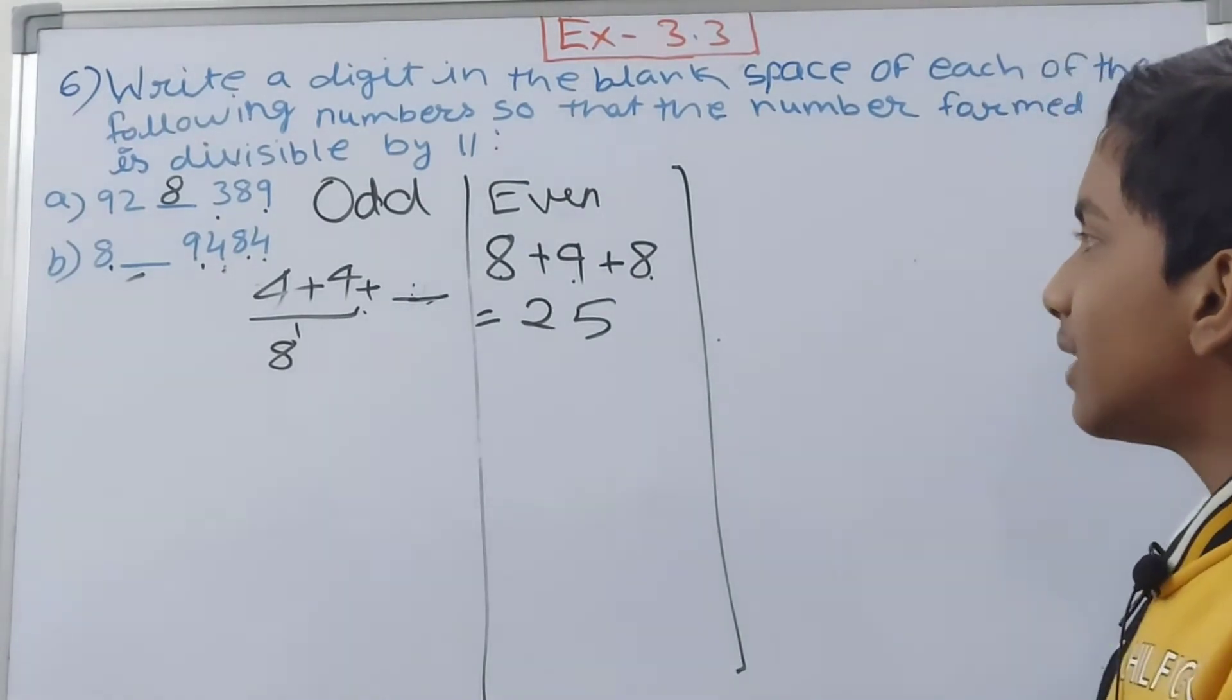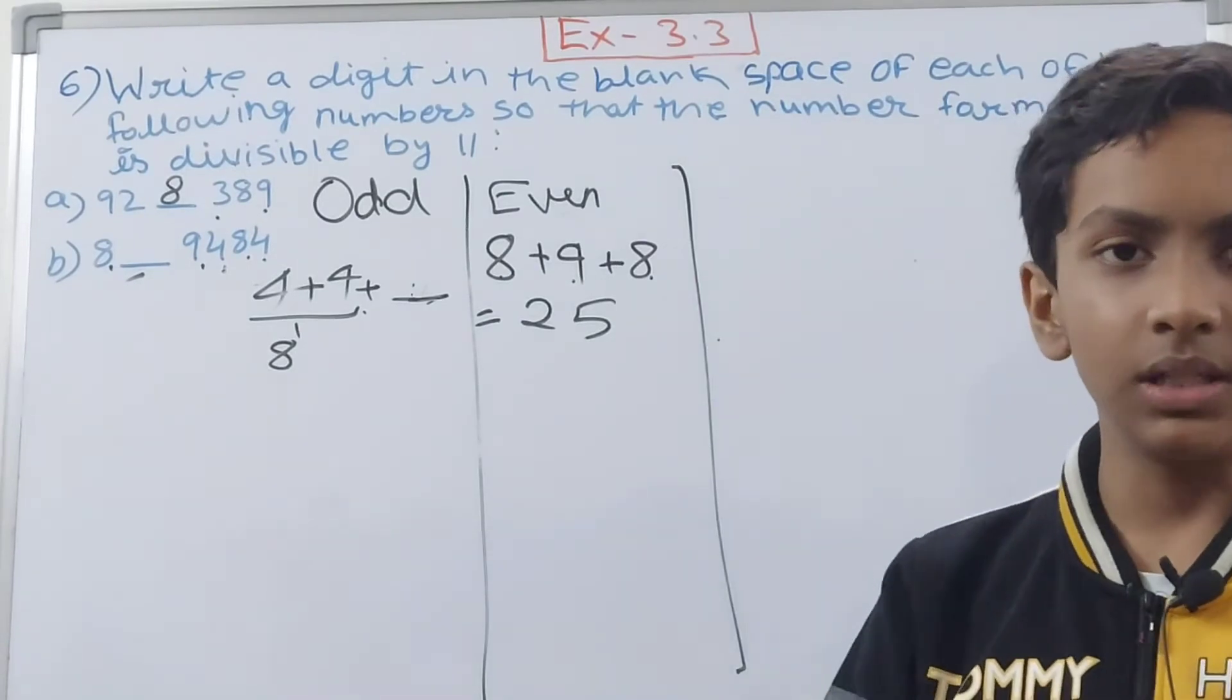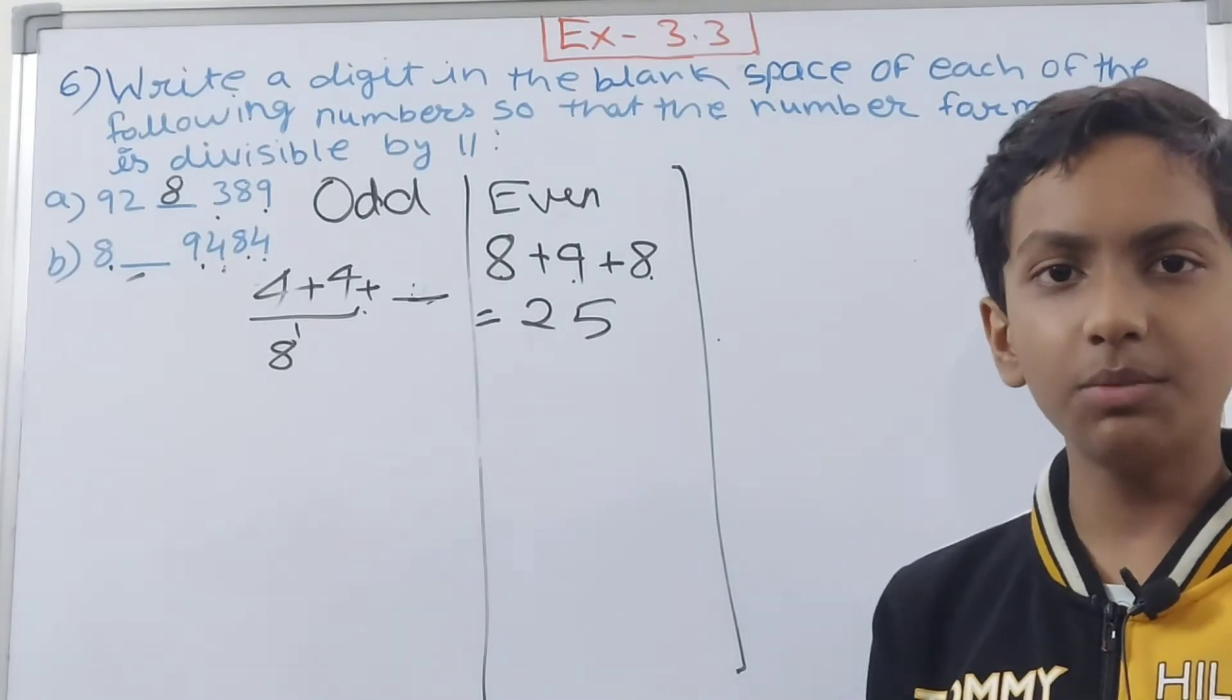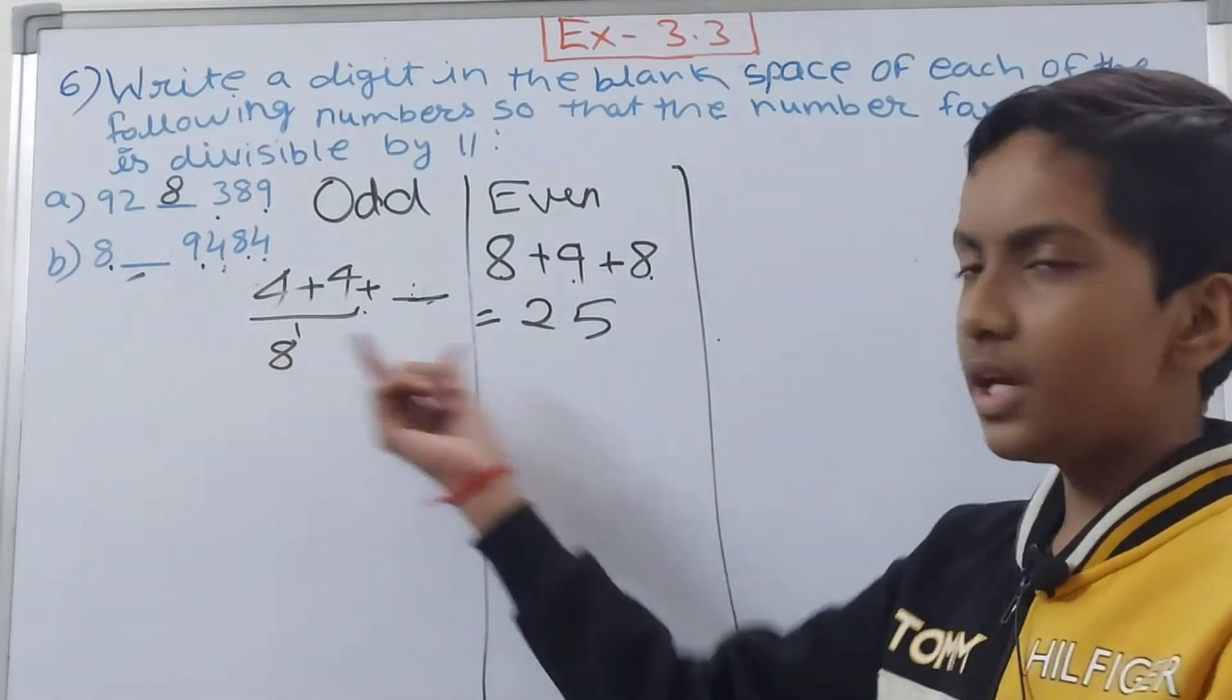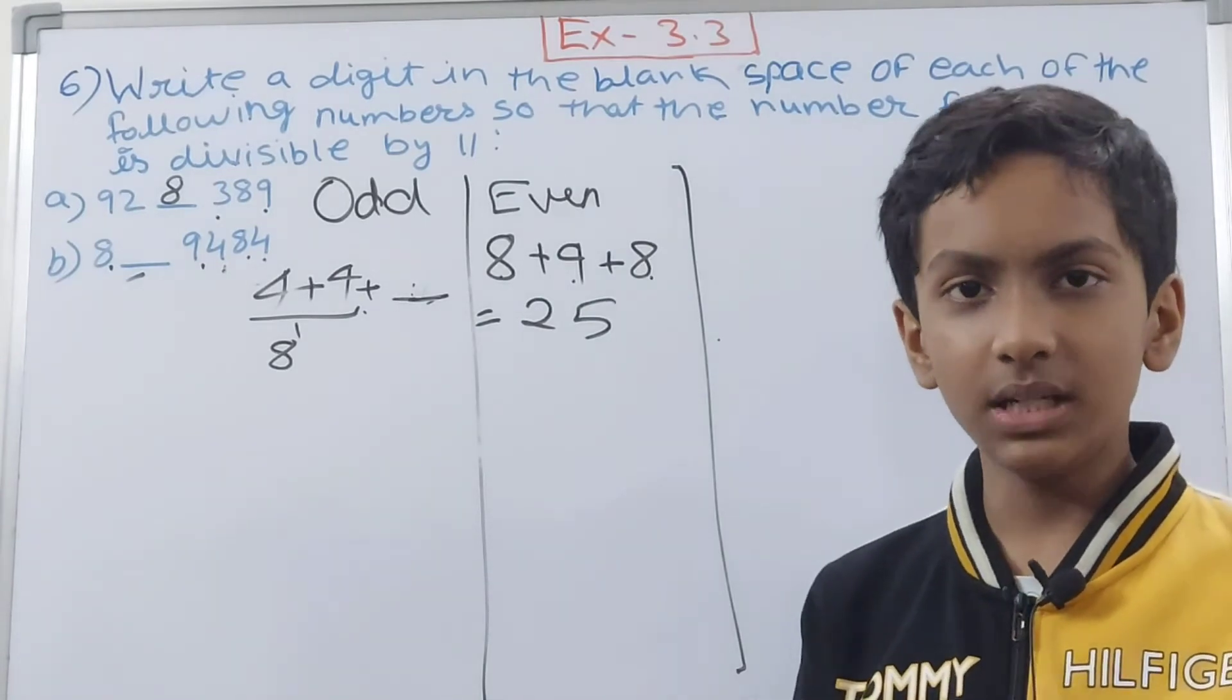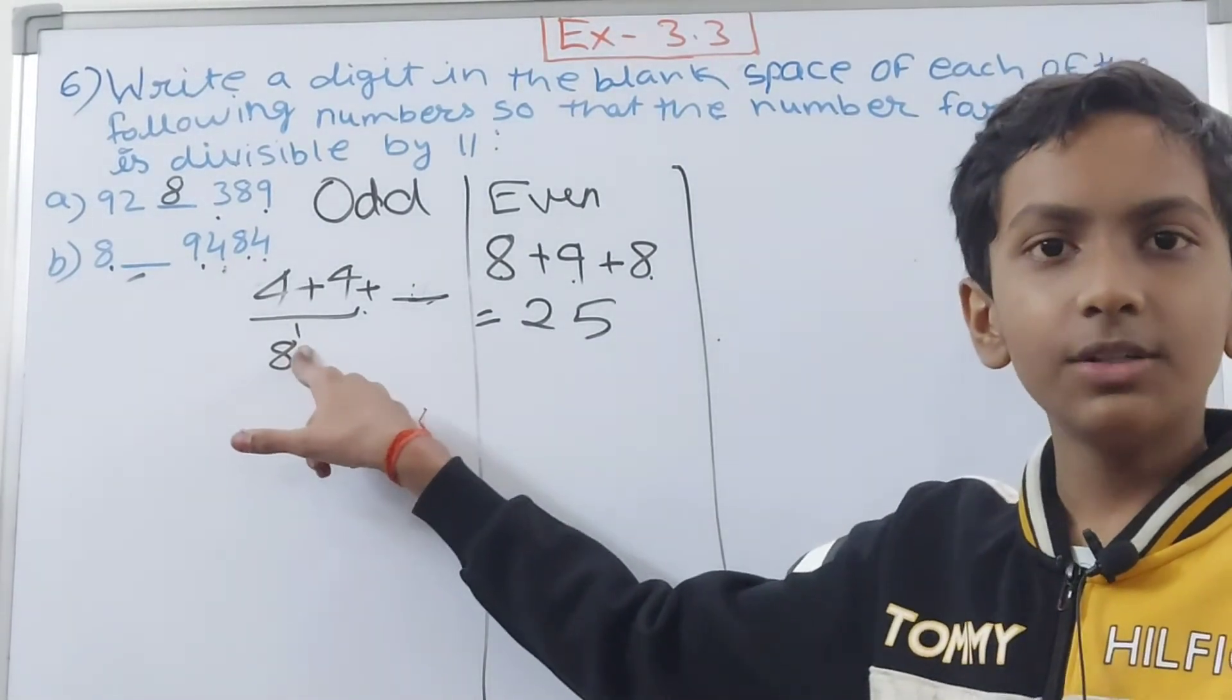Now we have to turn this 8 into something. If we can get that 17 to 11 then we can get our answer. If you are subtracting 8 from 25 you will get 17, but when you will subtract 14 from 25 you will get 11. So you need to add something to this 8 so this 8 will become 14.